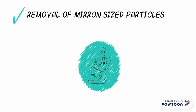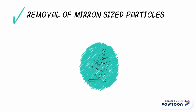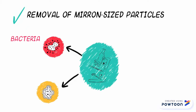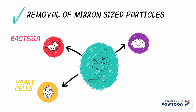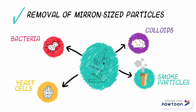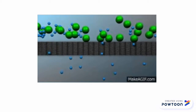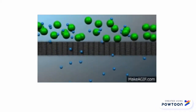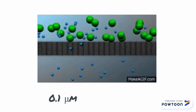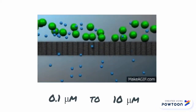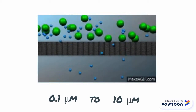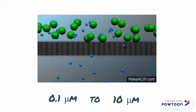Microfiltration is a separation technique for removing micron-sized particles like bacteria, yeast cells, colloids, and smoke particles from suspensions or gases. The process uses membrane filters with pores in the approximate size range of 0.1 to 10 micrometers, which are permeable to the fluid but retain the particles, thus causing separation.